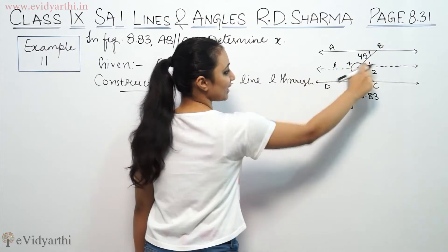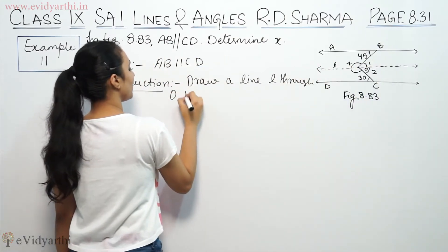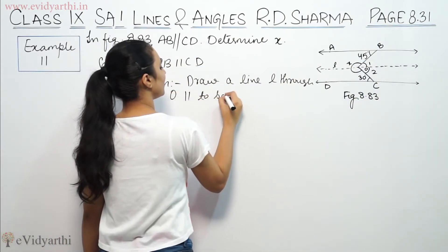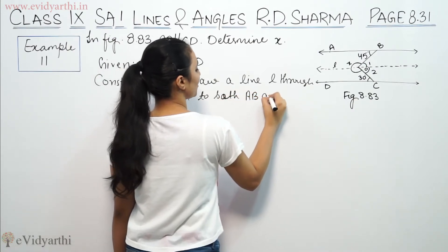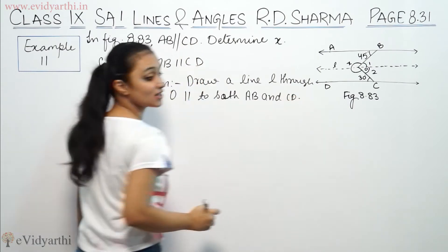This O is on this line, through O, parallel to both AB and CD. So this is parallel to both. This is the construction.